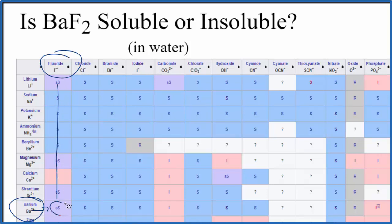That SS means barium fluoride is slightly soluble. Some will dissolve but not a lot, so it's kind of in between soluble and insoluble. When we're doing net ionic equations, for example, we treat slightly soluble compounds as insoluble.